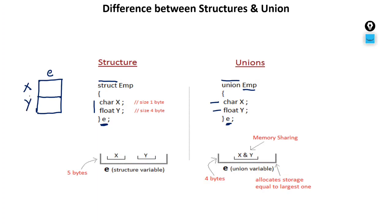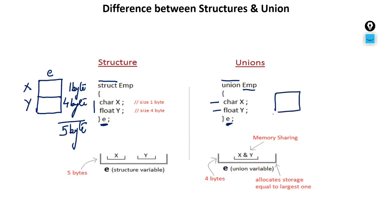Character takes one byte and float takes four bytes, so the structure will take a total of five bytes — the structure takes the sum of all members' sizes. But for union, only one block is created — no separate block for each member. The size of that block equals the size of the largest member. Since float is four bytes and character is one byte, the largest is four, so the union block size is four bytes. Both x and y share this single memory space.